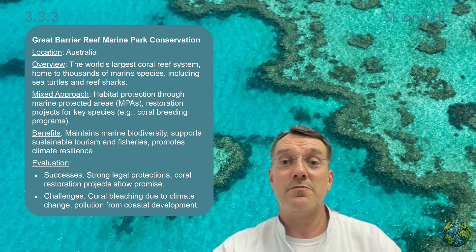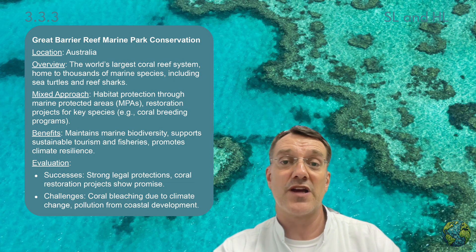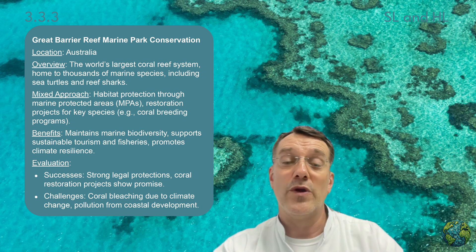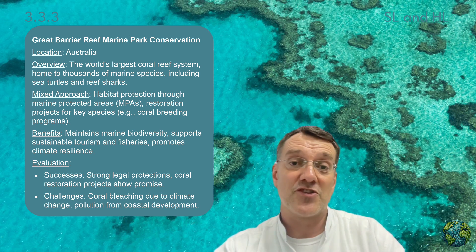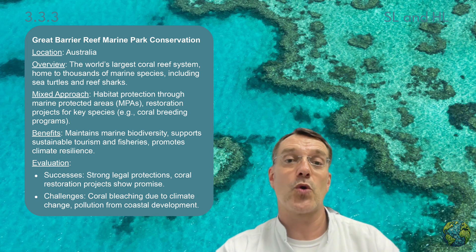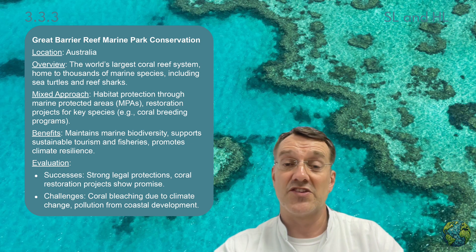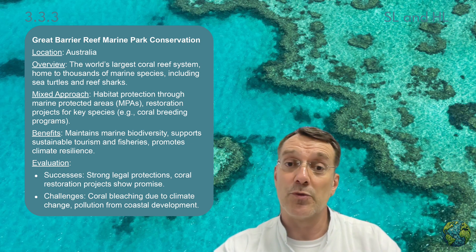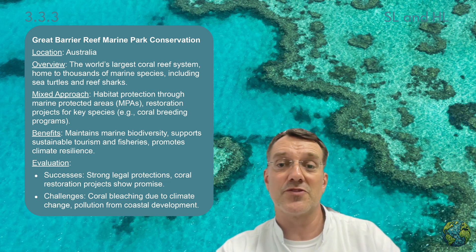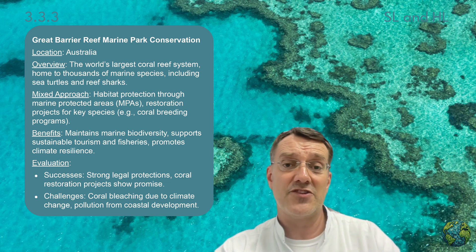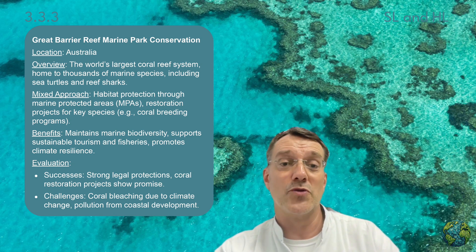The Great Barrier Reef Marine Park Conservation in Australia protects the world's largest coral reef ecosystem, home to thousands of marine species. The mixed approach includes habitat protection through marine protected areas and restoration projects such as coral breeding programs. Benefits include maintaining marine biodiversity, supporting sustainable tourism and fisheries, and promoting climate resilience. While strong legal protections exist and coral restoration projects are promising, the reef faces significant challenges from coral bleaching due to climate change and coastal pollution.